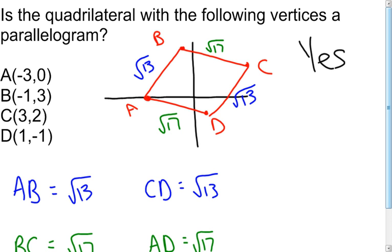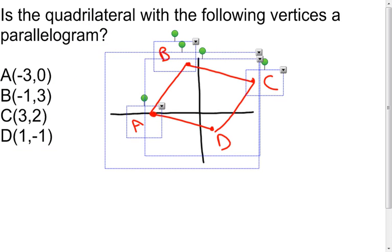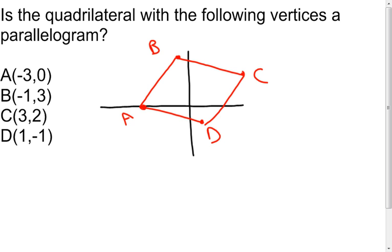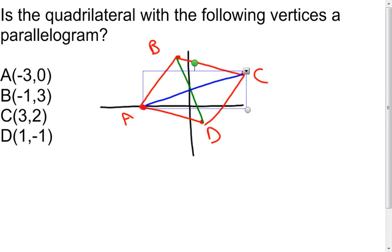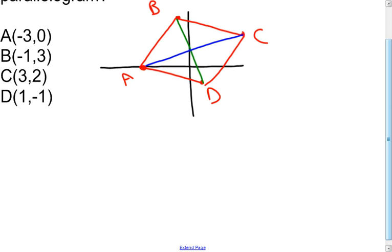Then I'm going to look at one more method. I'll use the theorem that says if both diagonals bisect each other in a quadrilateral, then it's a parallelogram. To do that, I'm going to look at these two diagonals. My way to check if they're cutting each other in half is to find the midpoint of segment BD and the midpoint of segment AC. If both midpoints are the same point, the diagonals are bisecting each other; if they're different points, they're not.